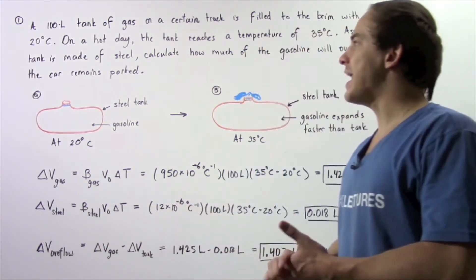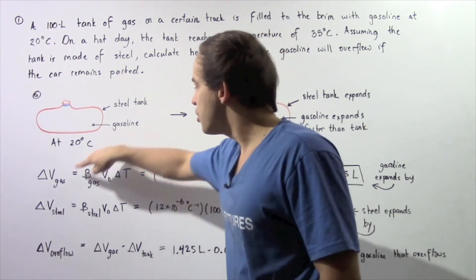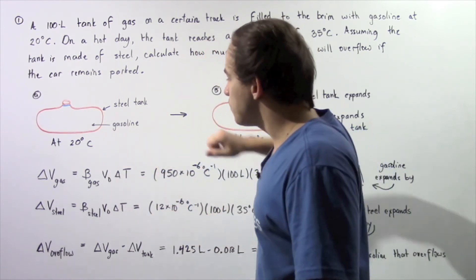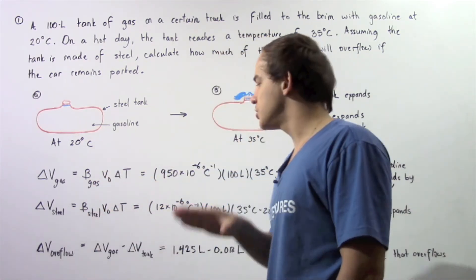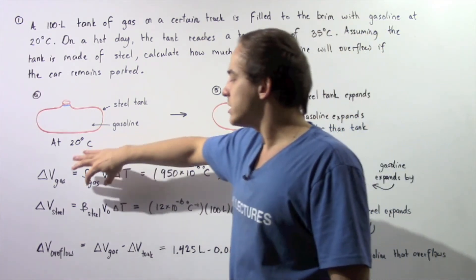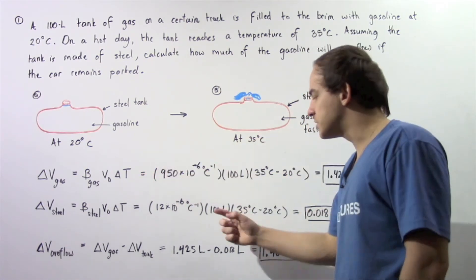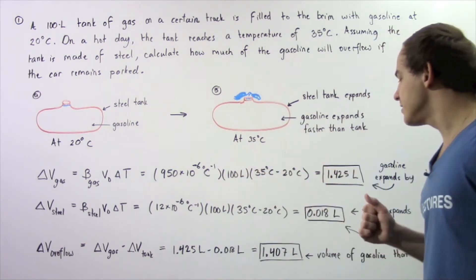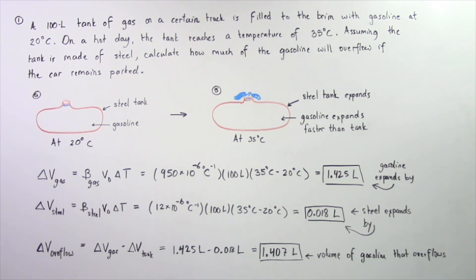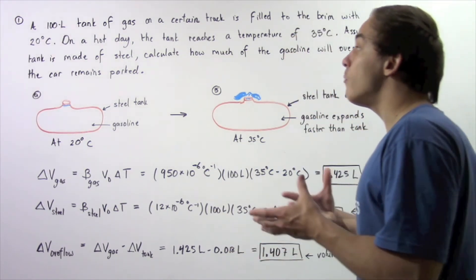Now let's move on to the change in volume of the steel tank. So in the same exact way, we use this same formula except now we replace our beta gas with beta steel. So this is the coefficient of volume expansion for steel. So once again, we can look this value up in a textbook. We get 12 times 10 to the negative 6 multiplied by 100 multiplied by 35 minus 20 or 15 degrees Celsius and we get 0.018 liters is by how much our steel tank expands.